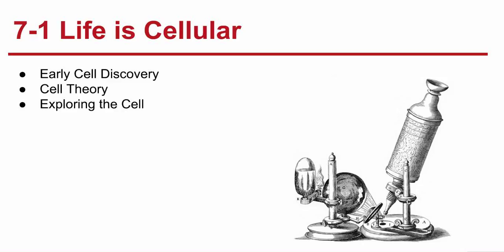Cell theory — cells are the basic units of life. In 1838, German botanist Matthias Schleiden concluded that all plants were made of cells. The next year, Theodor Schwann stated that all animals were made of cells. And then in 1855, German physician Rudolf Virchow concluded that new cells could only be produced from the division of existing cells. So the cell theory states: all living things are composed of cells, cells are the basic units of structure and function in living things, and new cells are produced from existing cells.